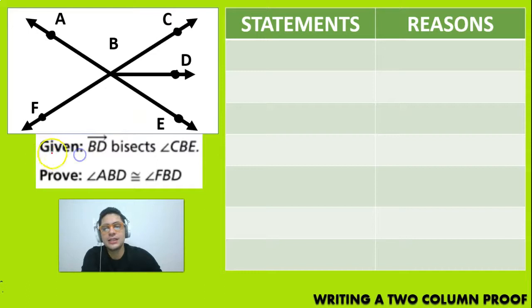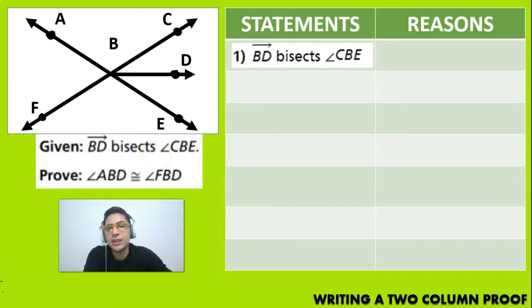So the first thing is that we're going to see the given. So the given information is that the ray BD, which is this right here, is going to bisect the angle CBE. Okay. So we have to remember that the definition of bisecting an angle is that this angle is actually going to be similar to this one. Okay. But the first thing we have to see is that the ray BD bisects the angle. So that is going to be our first statement. And when we write down the reasoning, it's going to be given.